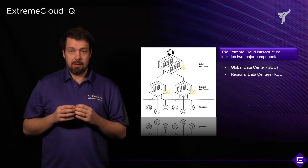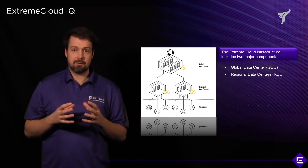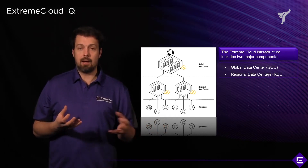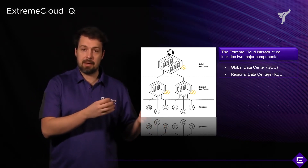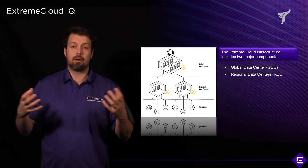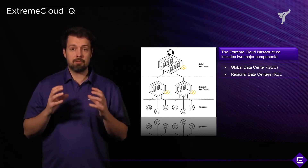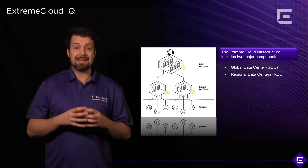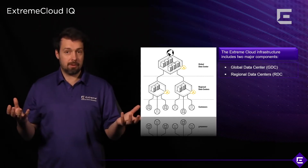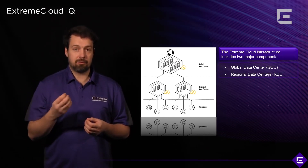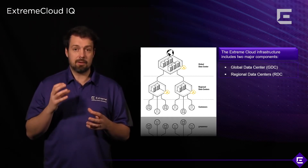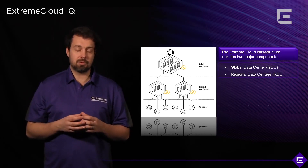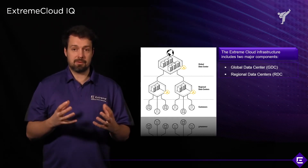The Global Data Center is based in Ireland, and there are actually a lot of RDCs with two flavors. There's a private RDC running in a customer's own data center, and a public RDC running on our cloud infrastructure. Importantly, because we have our data centers in-country, the data stays in-country. For example, if you are a customer in Germany, the data will stay in our Frankfurt data center and will not leave the RDC — which is key for security and privacy.